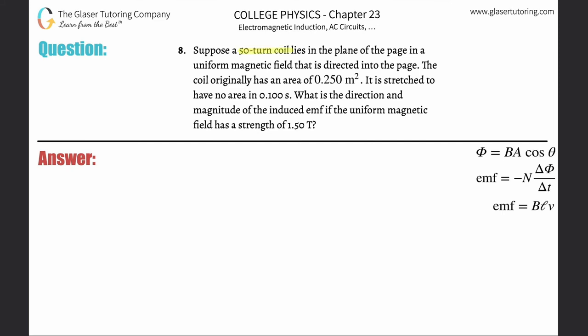Number eight: Suppose a 50-turn coil lies in the plane of the page in a uniform magnetic field that is directed into the page. The coil originally has an area of 0.25 meters squared. It is stretched to have no area in 0.1 seconds. What is the direction and magnitude of the induced emf if the uniform magnetic field has a strength of 1.5 tesla?